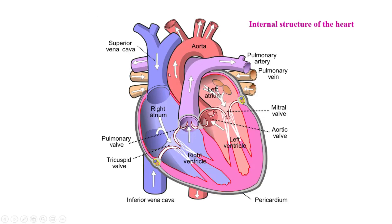You are observing the internal structure of the heart. The upper chambers are called auricles, and the lower chambers are called ventricles. This is the left side and this is the right side.